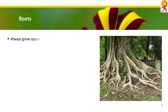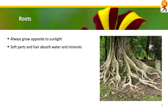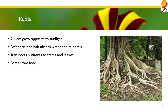Roots of angiosperms always move opposite to sunlight. The soft part of roots and root hair absorb water and mineral salts from the soil. The root transports water and mineral salts to the stem and ultimately to the leaves. Some roots like carrot, radish, etc. store food, and in contingency plants use these foods.